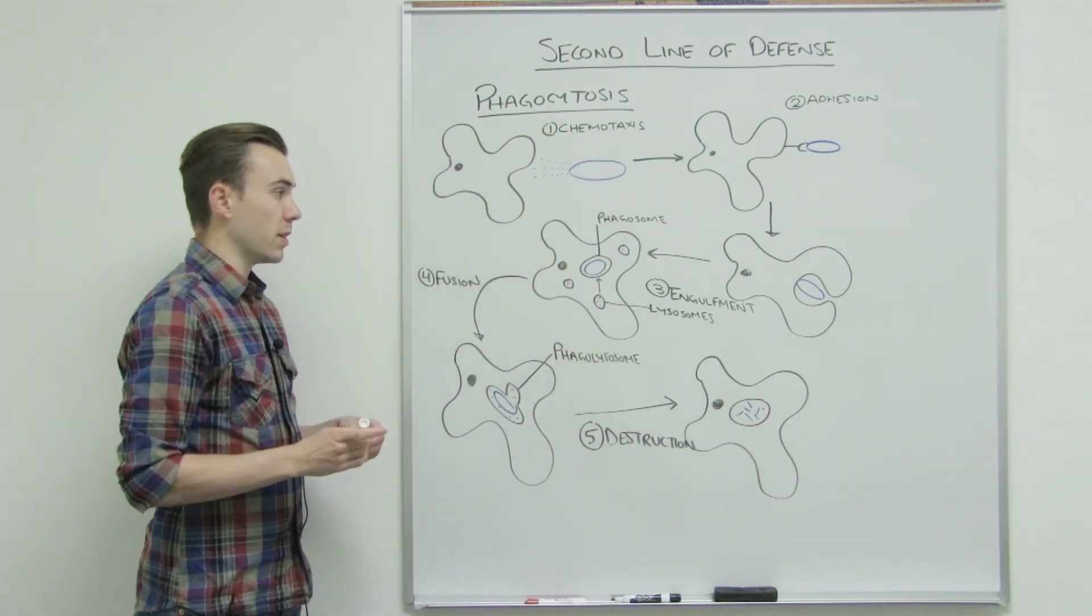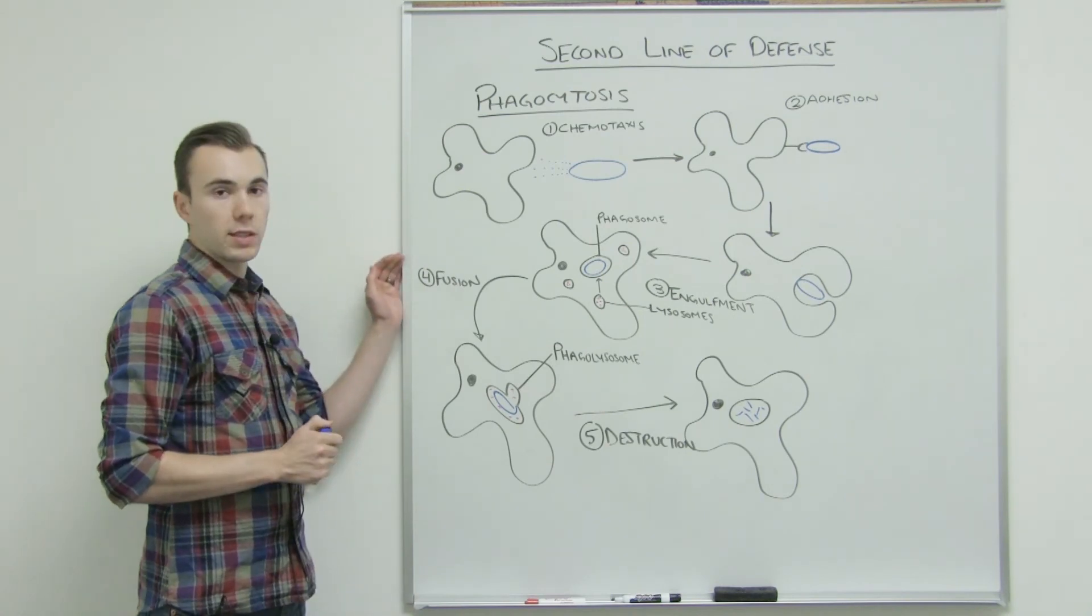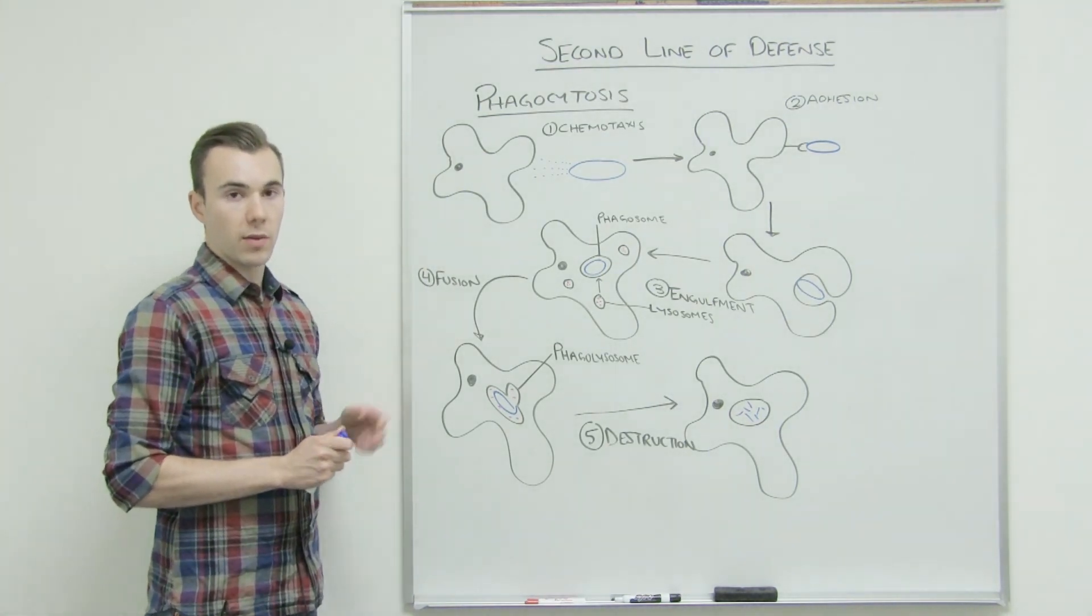And remember, phagocytosis can be done by any of the white blood cells. So neutrophils, dendritic cells, or macrophages.